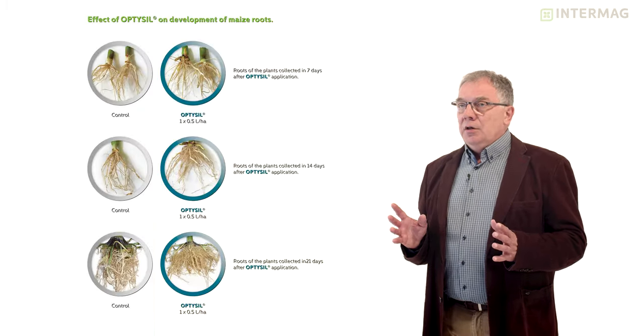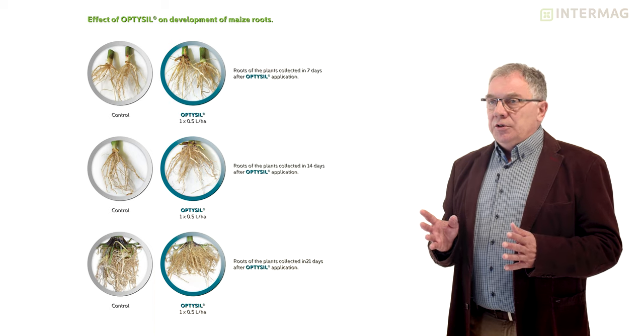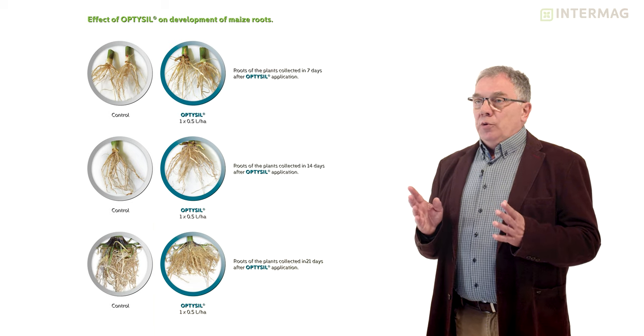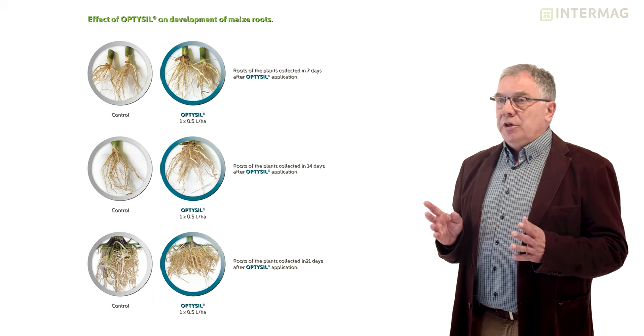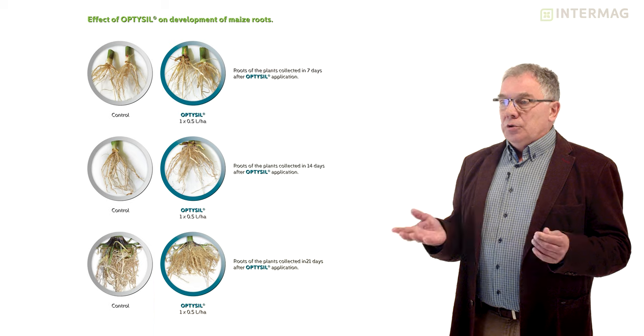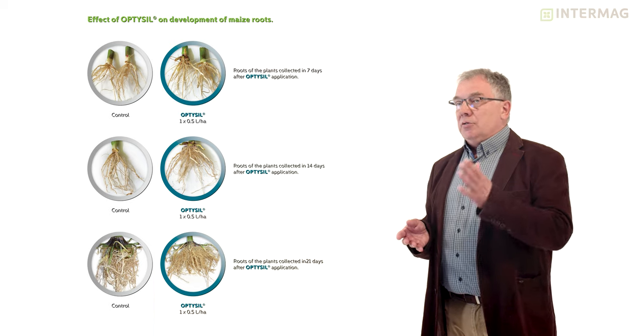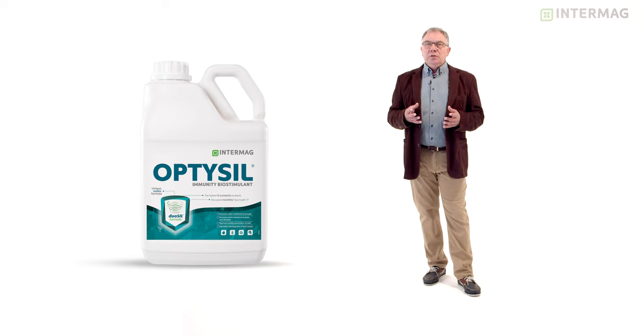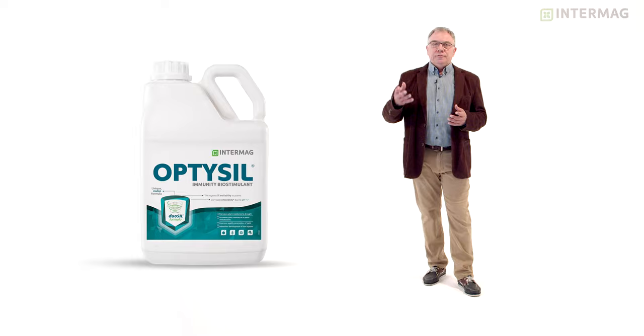If you look at this picture you can clearly see that application of OptiSeal could be very effective even within 21 days after application. On the left side you can see the roots of plants which were not treated with OptiSeal. On the right side the treated with OptiSeal. In my opinion we do not need any comments. We clearly see that application of OptiSeal significantly increases the number of roots which is very beneficial to plants.